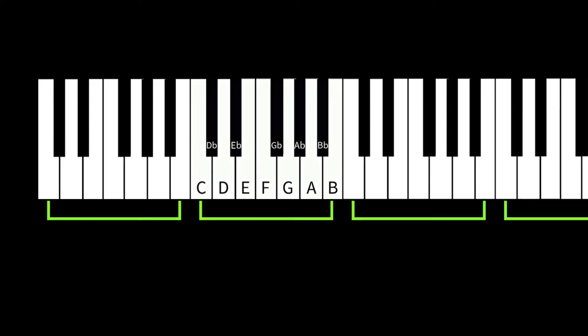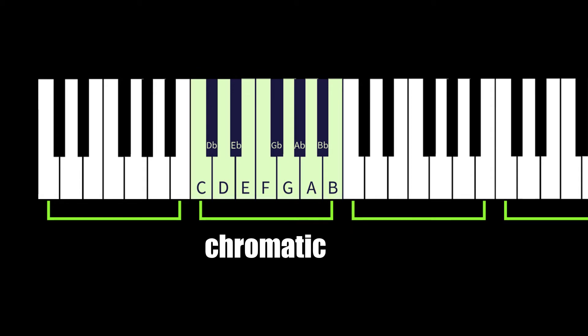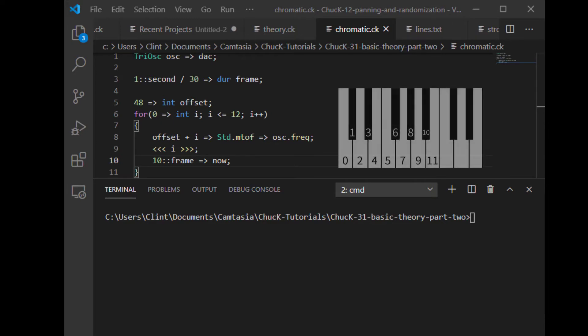So if we take this set of 12 keys, the set that repeats, we can call that set a chromatic set of pitches. And if you play them back to back, you get what we'll call a chromatic scale. If we rename these pitches to numbers, specifically like this, we can see how the numbers stack up inside that chromatic scale. If we write a Chuck script that loops through those numbers, we can hear what a chromatic scale sounds like.